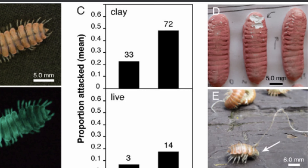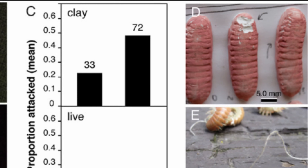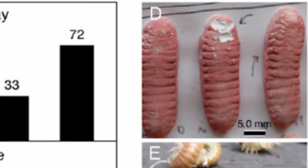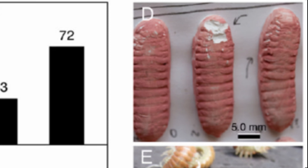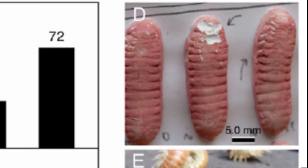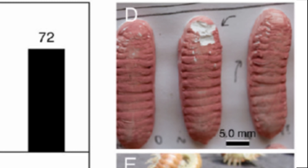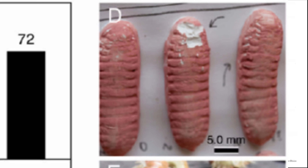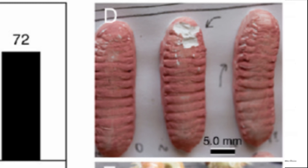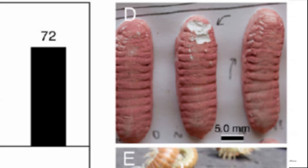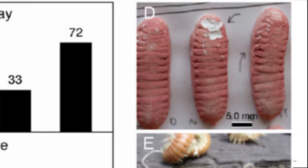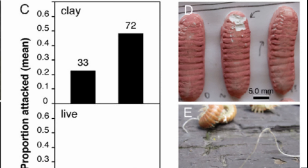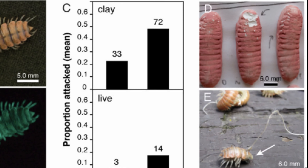What the researchers did was make clay models of the millipede. Some of them they made glow in the dark and some of them they didn't. They put these clay models out and let them sit there overnight. Then in the morning, they went back and checked to see if there were any bite marks on the clay models. The bite marks would suggest that a rodent or some predator tried to attack the clay model.